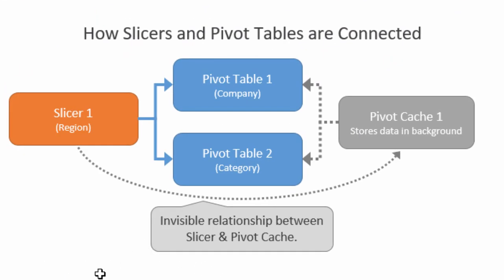Here I have a diagram of what's really going on with our pivot tables and the relationships between the slicer and the pivot table — there are also some invisible relationships going on as well. In the background Excel creates what it calls a pivot cache, which stores the source data and allows multiple pivot tables to share that cache. That's exactly what's happening here — pivot table 1 and pivot table 2 both share the pivot cache because they both use the same source data range.